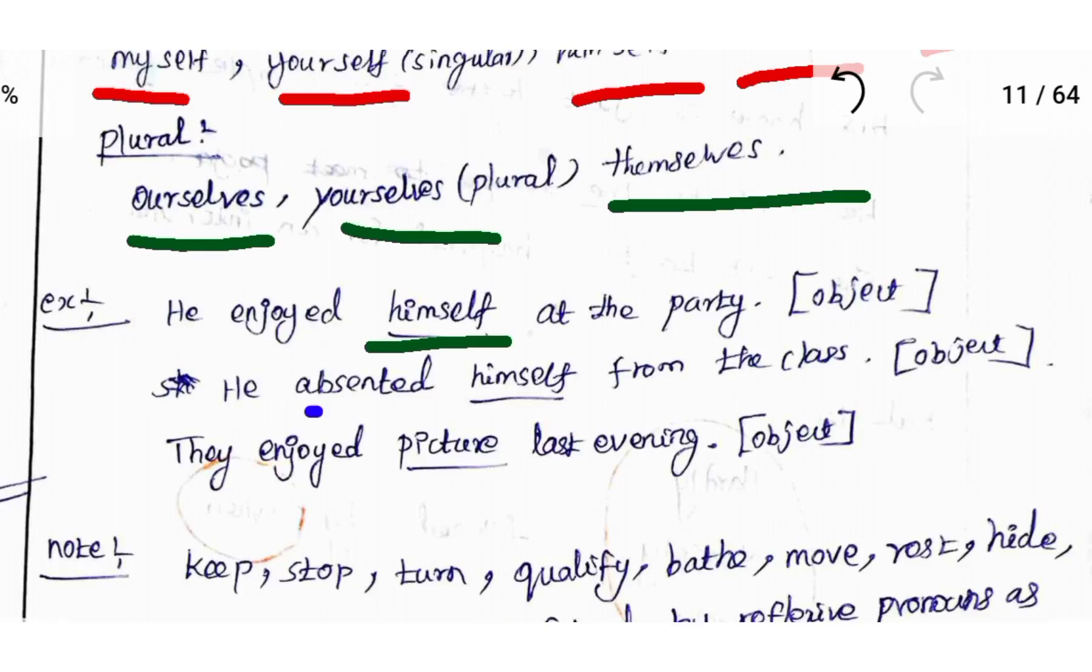He absented himself from the class. Absented is followed by object, but here there is no object, so we use reflexive pronoun as their object.